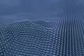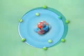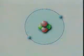Aluminum, found in this flashing, for example, is made up of aluminum atoms. An atom is the smallest part of an element that still has all of the properties of that element. Each different kind of element is made up of a different kind of atom.